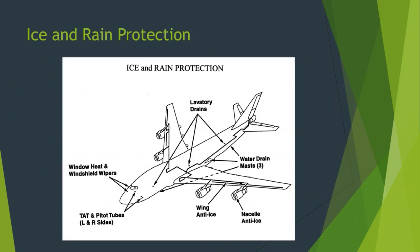Water drain masts cover things like hand-washing sinks and coffee makers — that kind of thing. It doesn't include gray water or black water, which is the toilets. That waste is stored on board the aircraft and pumped out once the airplane lands.